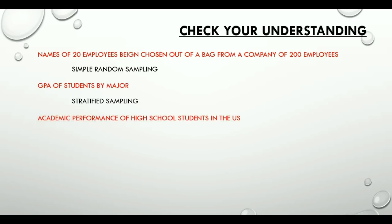Third question: academic performance of high school students in the US. We are talking about millions of students divided into different cities and different states. We can go ahead and get some clusters of students from different cities and study further, so this would come under cluster sampling.